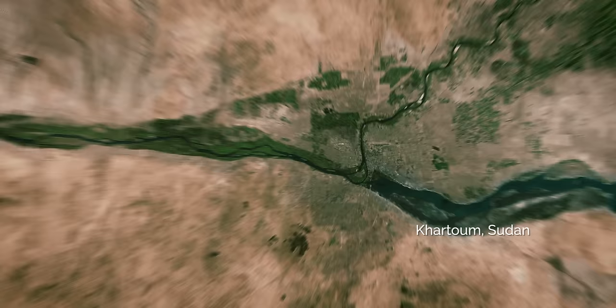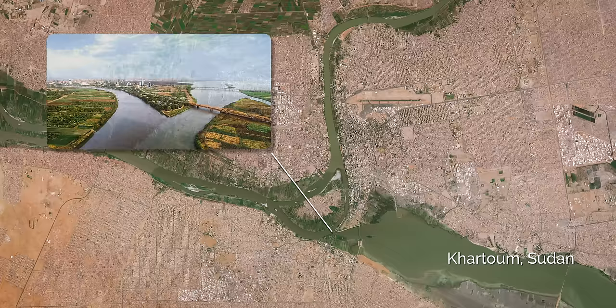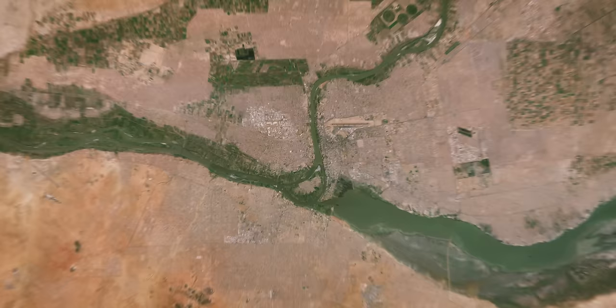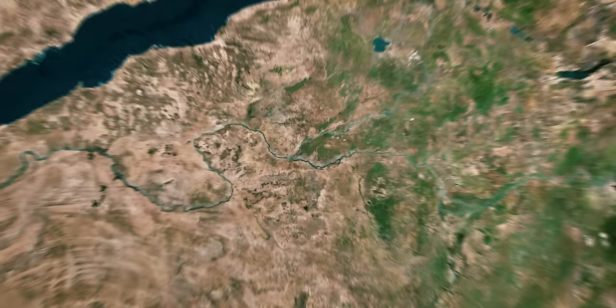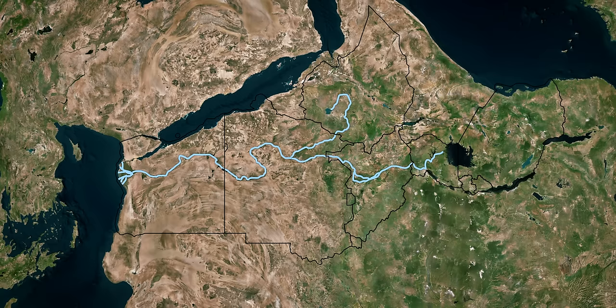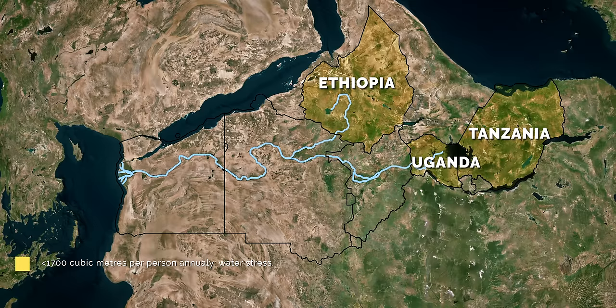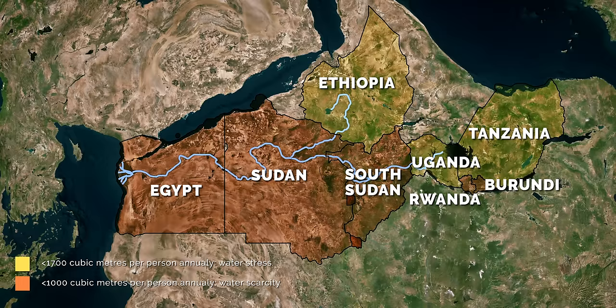The White Nile is named after its lighter grey color, which is a result of clay sediments in the water. For countries along the Nile, the river is of significant importance. However, dependency on the Nile also creates conflicts between nations. Ethiopia, Uganda, and Tanzania suffer water stress, which means that there are fewer than 1,700 cubic meters of water per person annually available. In Burundi, Rwanda, South Sudan, Sudan, and Egypt, it is even less than 1,000 cubic meters of water — an amount at which it is considered water scarcity.